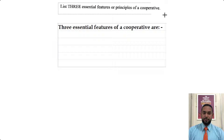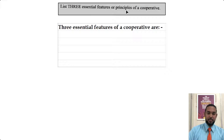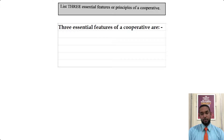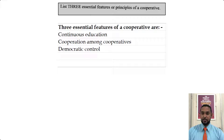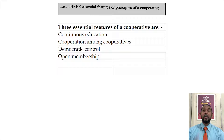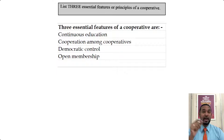So it starts off very simply: list three essential features or principles of a cooperative. You know me, I like to give a little more than three. So we have continuous education, cooperation among cooperatives, democratic control, and open membership. You can take any three of those. If you have any more, please feel free to put them in the comment section below and I'll pin the best list.